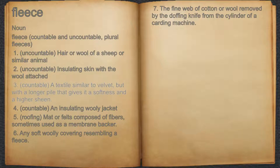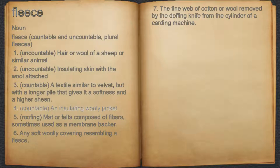3. Countable, a textile similar to velvet, but with a longer pile that gives it a softness and a higher sheen. 4. Countable, an insulating woolly jacket.